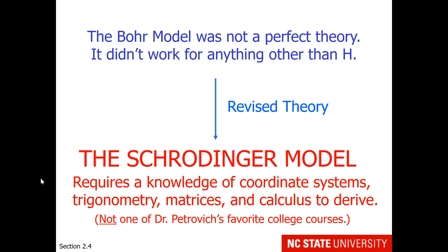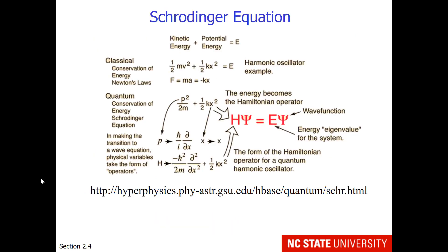This is a pretty complex mathematical description of electron orbitals, and scientists who do calculations with the Schrödinger model have to know about coordinate systems, trigonometry, matrices, and calculus to derive this. I did take quantum mechanics when I went to college — it was not one of my favorite courses. One of the reasons is that this is extremely heavy math. It involves the transformation from classical physics to quantum physics by assuming that the electron travels in a wave-like pattern.